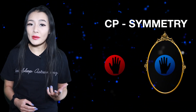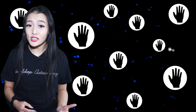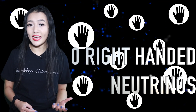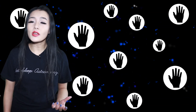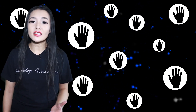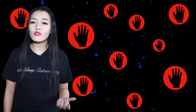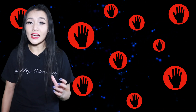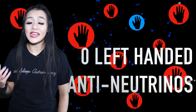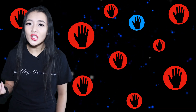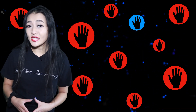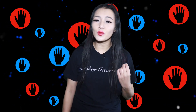Neutrinos violate P-symmetry because there are plenty of left-handed neutrinos in our universe, but no right-handed neutrinos have ever been observed. If we were to mirror one neutrino, the laws of physics would change — hence it violates P-symmetry. And similarly, if you reverse the charge of left-handed neutrinos, you would expect to get left-handed antineutrinos, but these are not known to exist, and thus violate C-symmetry. However, neutrinos aren't believed to violate CP-symmetry because right-handed antineutrinos are known to exist, and maybe this is the true symmetry.